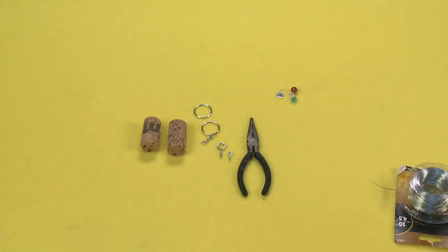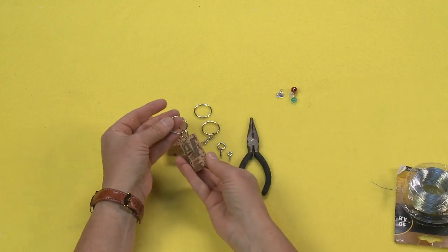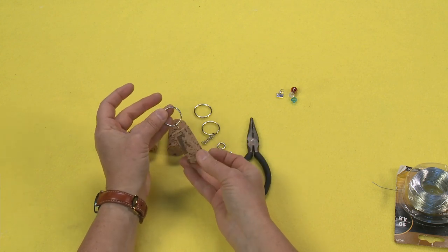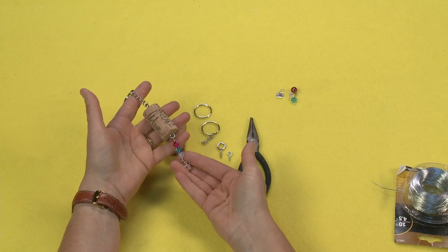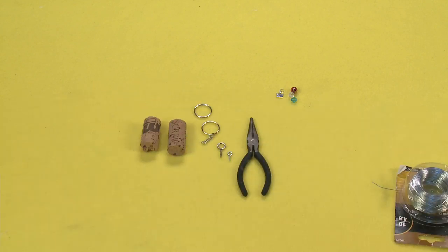There are two ways to make this. You can make it very simple, like this, which is just a cork on a keychain, or you can add some pretty little beads. And that's what I'm going to be doing right now.